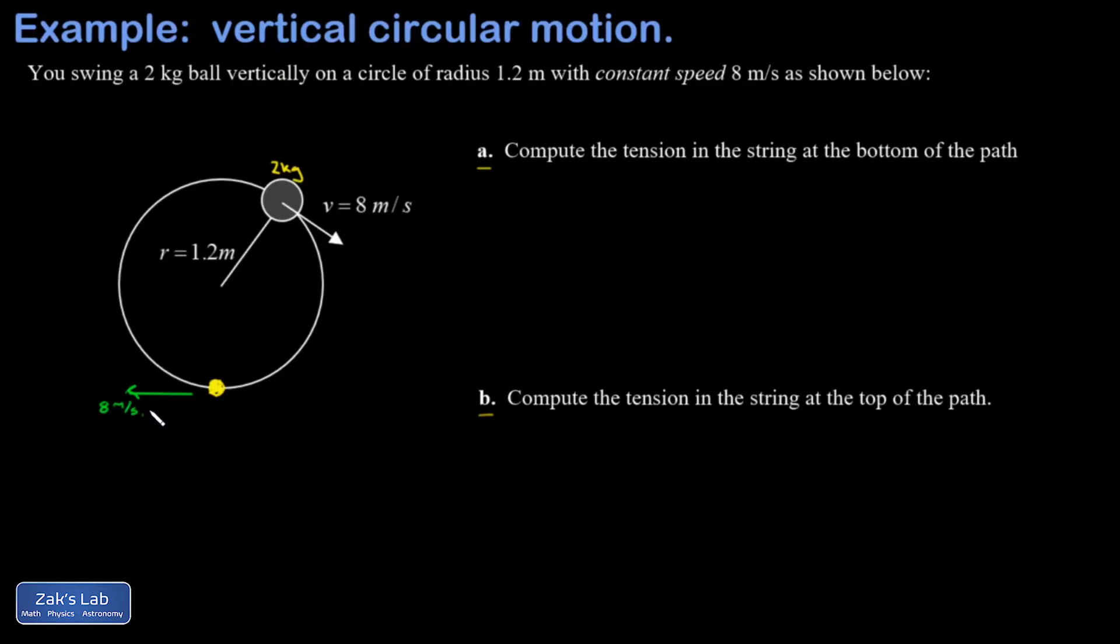If I get force vectors in, I have gravity always pulling straight down and mg is going to be two kilograms times 9.8 meters per second squared, 19.6 newtons. And then I have the tension pulling toward the center of curvature, so tension in that string.